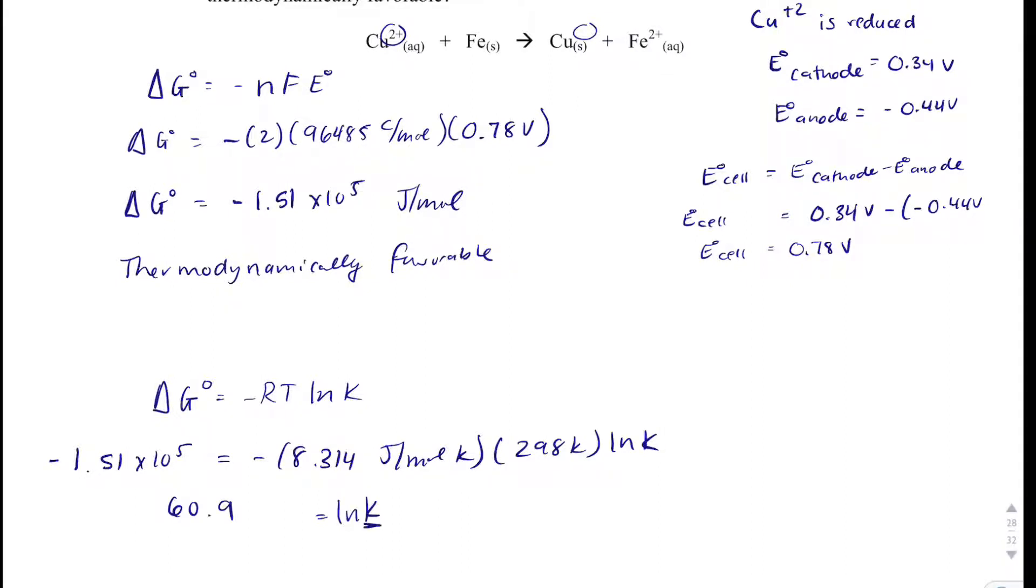So what I'm going to do is I want just K. So I'm going to take E to whatever number is on the opposite side. That's going to be 60.9, that's going to equal K. So I'm going to take E to the 60.9 power, and K is going to be 2.81 times 10 to the 26th.